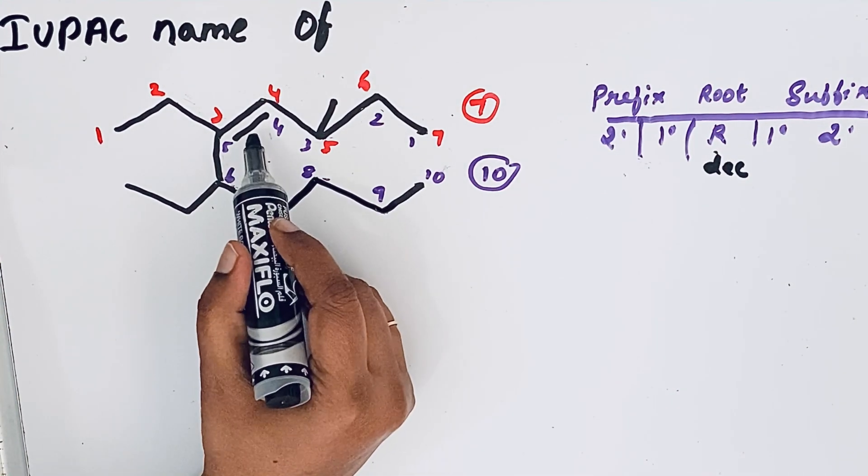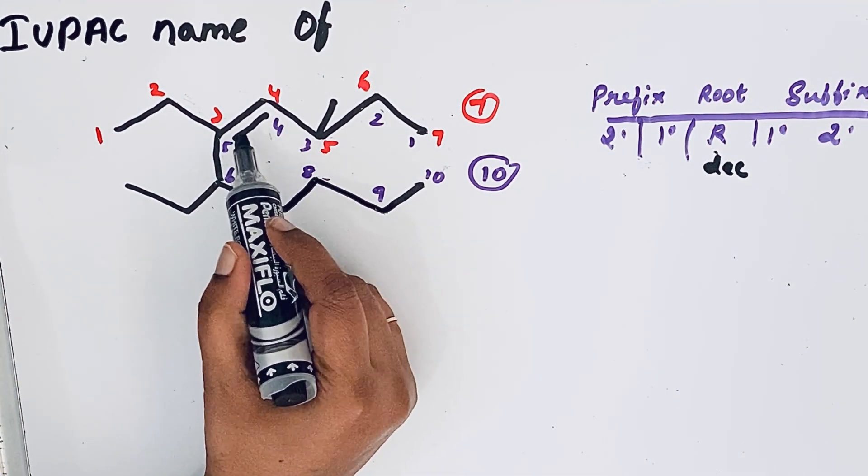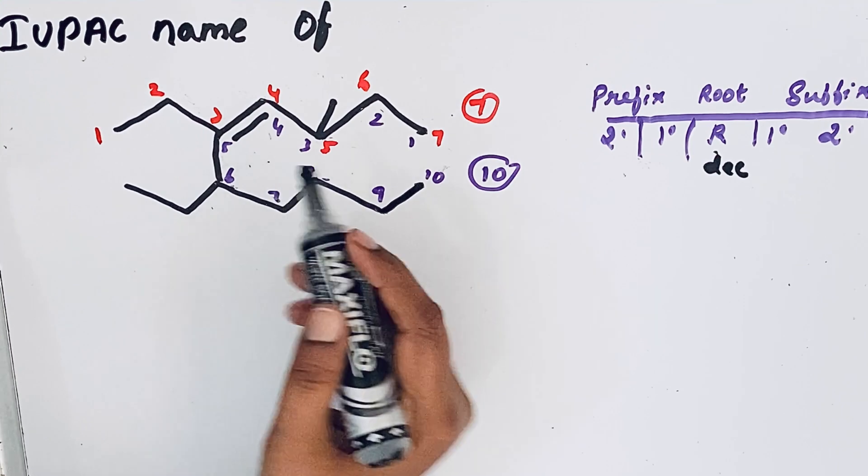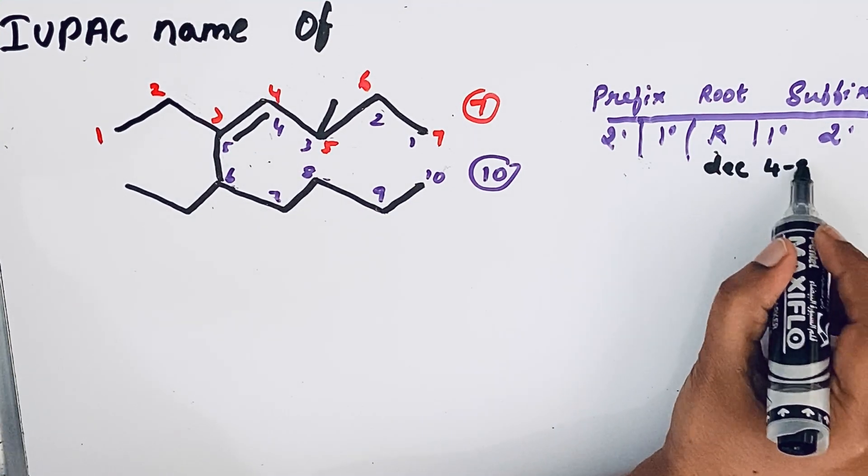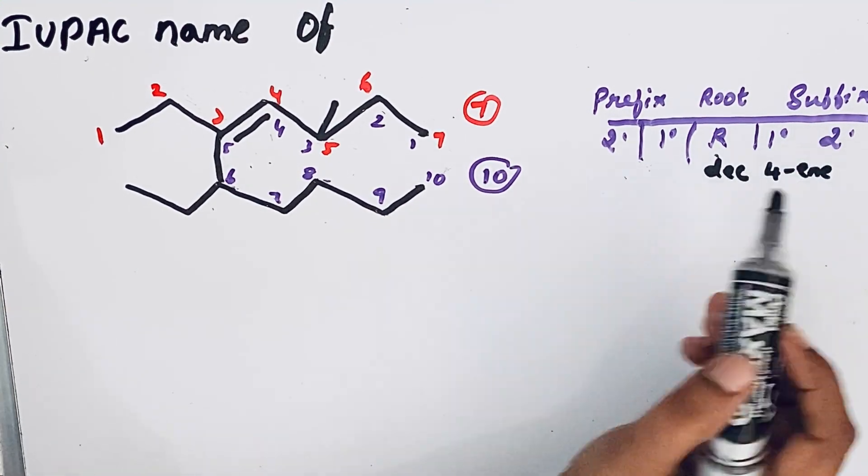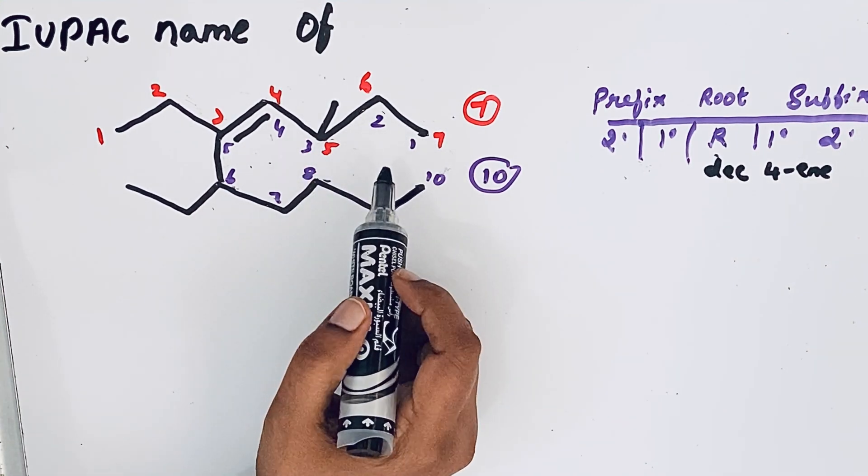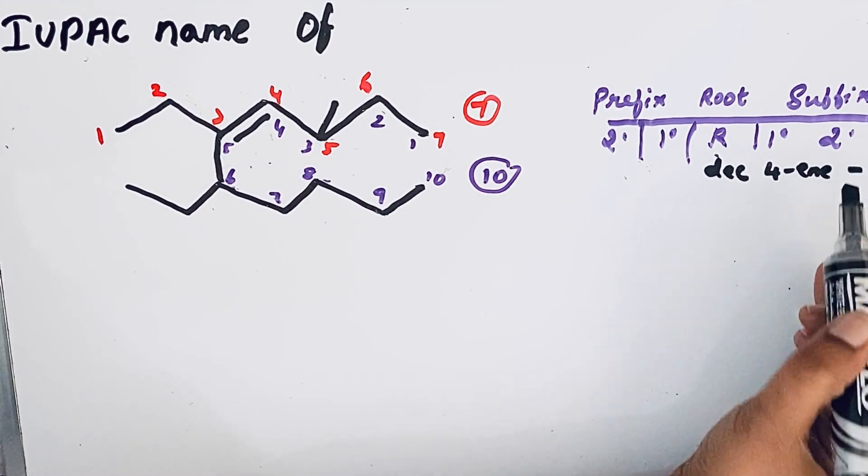There is a double bond in the fourth position, so four-ene. Any secondary suffix? There is no other functional group, so secondary suffix is absent.